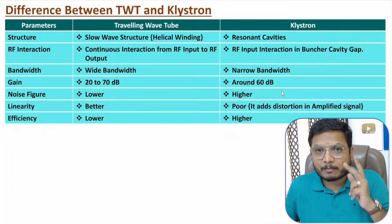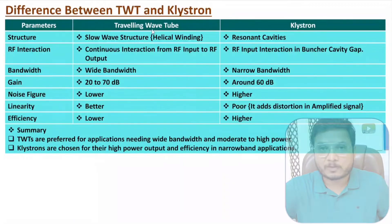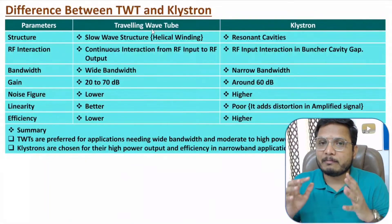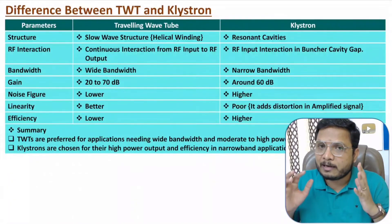To summarize the comparison: for applications based on wide bandwidth and moderate to high power, prefer the traveling wave tube. For applications needing higher efficiency and higher power, prefer the klystron. For applications requiring lower noise, prefer the traveling wave tube. About 50% of tubes in the market are traveling wave tubes.